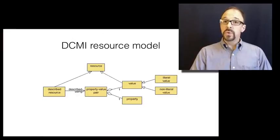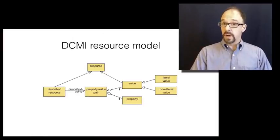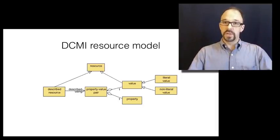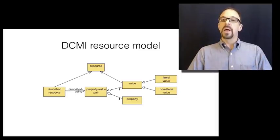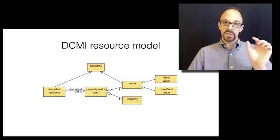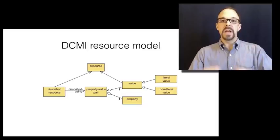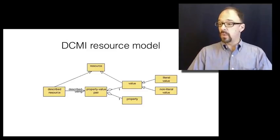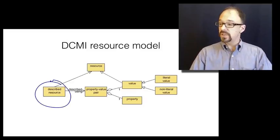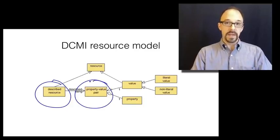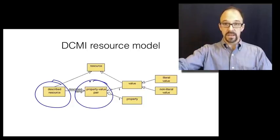Now, think back to the Dublin Core abstract model that we looked at in the previous unit, which is, you'll recall, the logic according to which things are described in Dublin Core. Now, the D in RDF means description because descriptive metadata is made up of descriptive statements that you make about a resource. So, in the abstract model, what we have is the described resource, which is described using a property-value pair, which in the language of Dublin Core is an element and the associated value.